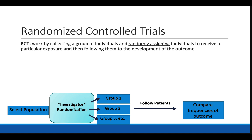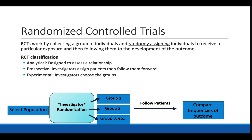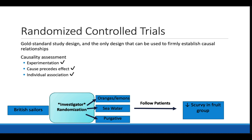Randomized control trials are the highest level of evidence for a single study. RCTs involve randomly assigning patients to different treatment groups, which ensures the groups differ on important characteristics so confounding variables are less likely. RCTs are analytical — they're designed to assess a relationship. They're prospective, as investigators assign patients then follow them forward. And they're experimental because the investigators choose the groups. The RCT is the only study design that fulfills all three of our causality criteria because it's the only true experiment.